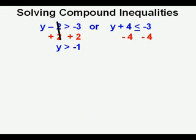To work the problem on the right, we subtract 4 from both sides. We cancel 4 minus 4 on the left side and we bring down the result, which is y is less than or equal to negative 7.